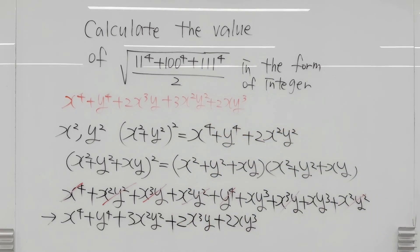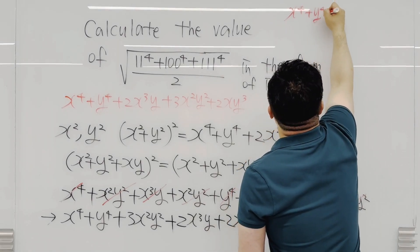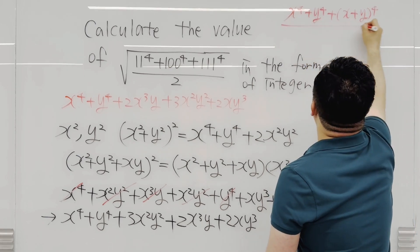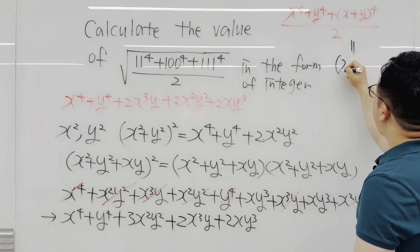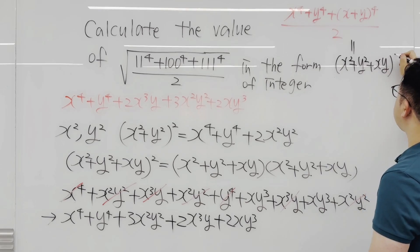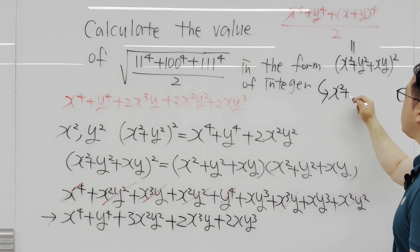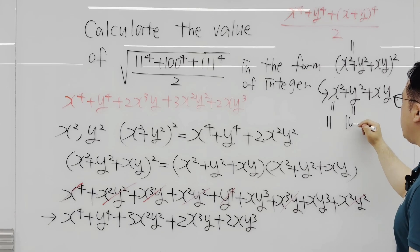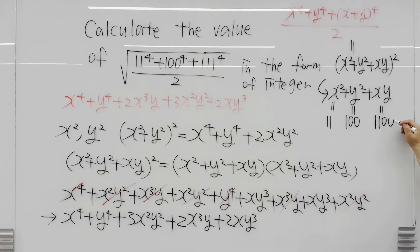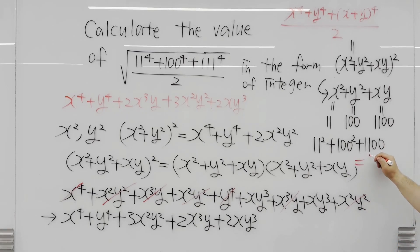Using this identity, what we're looking for — x⁴ plus y⁴ plus (x+y)⁴ over 2 — equals (x²+y²+xy)². So taking the square root gives just x²+y²+xy. Substituting back with x=11 and y=100: xy equals 1100, so the answer is 11² plus 100² plus 1100, which equals 121 plus 10000 plus 1100 — giving us 11,221.